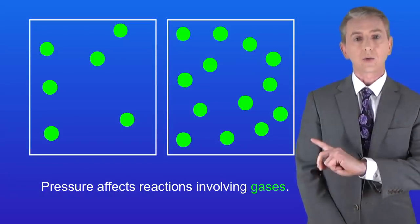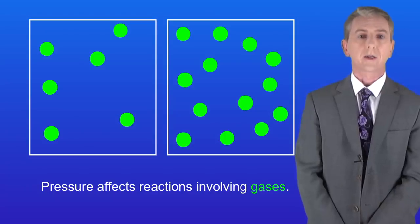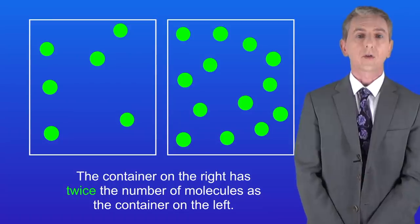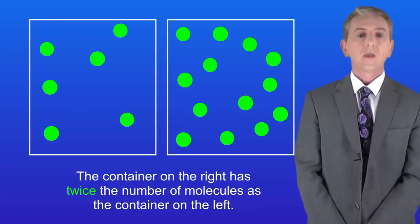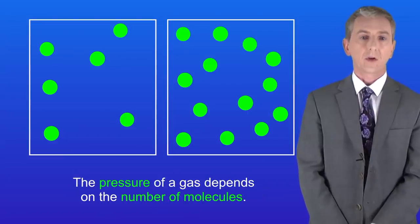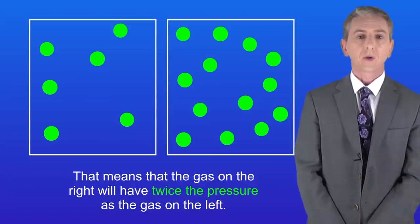I'm showing you here two gases. These are at the same temperature and in the same volume container. As you can see, the container on the right has twice the number of molecules as the container on the left. This brings us to the second key fact. The pressure of a gas depends on the number of molecules. So that means that the gas on the right will have twice the pressure as the gas on the left. Now the pressure of a gas does depend on other factors but in this video we're just focusing on the number of molecules.